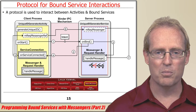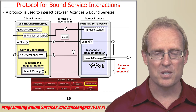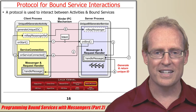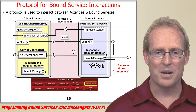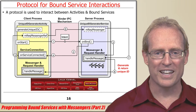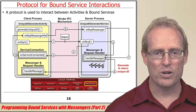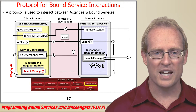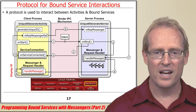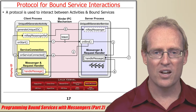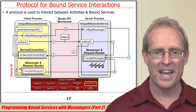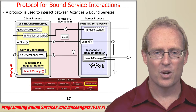One of the threads in the pool dequeues the runnable, generates a system-wide unique ID, and returns the ID back to the reply handler running in the activity. Android's binder and handler frameworks once again collaborate to dispatch the handleMessage hook method on the reply handler, which displays the unique ID to the screen.